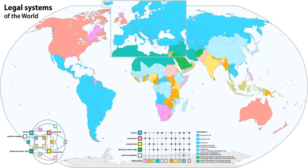Scholars of comparative law and economists promoting the legal origins theory usually subdivide civil law into four distinct groups. French civil law is in use in France, the Benelux countries, Italy, Romania, Spain, and former colonies of those countries.